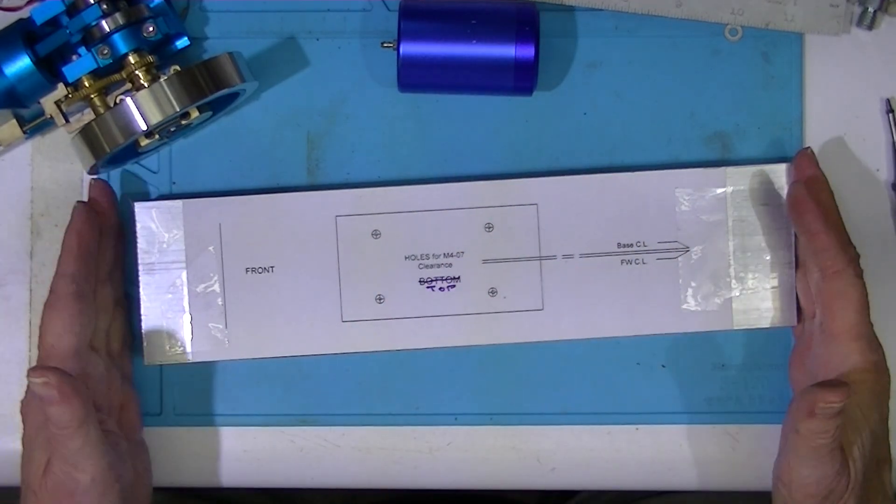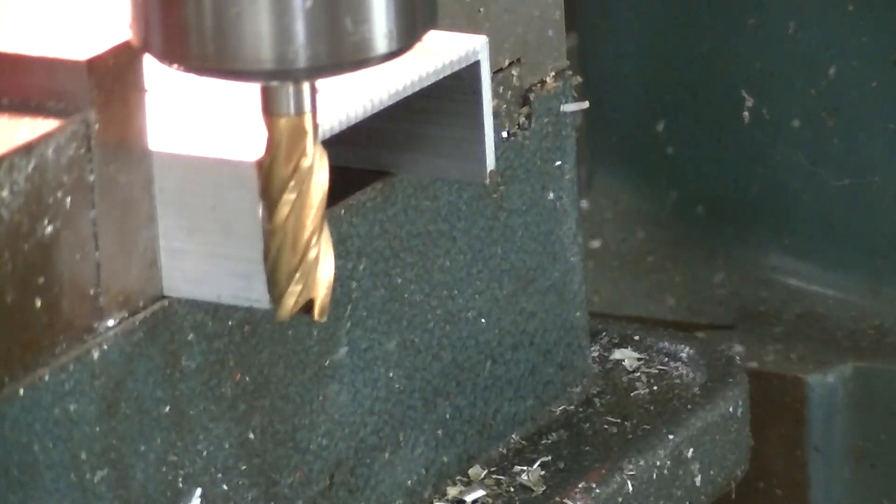It's time to drill the holes and square the ends up on the mill. I'm going to square up the end of the aluminum base.